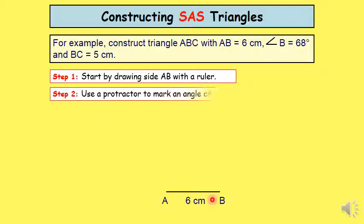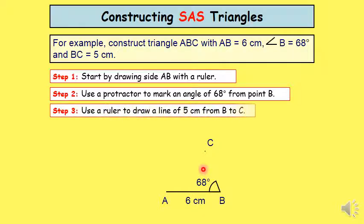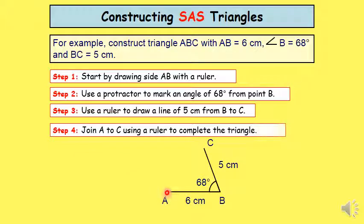Step 2, we use a protractor to mark an angle of 68 degrees from the point B. Step 3, we draw the third side, which measures 5 cm. The last step, we join A and C to get the triangle.